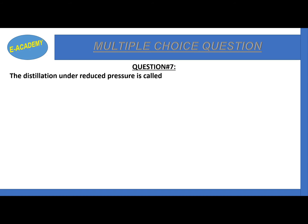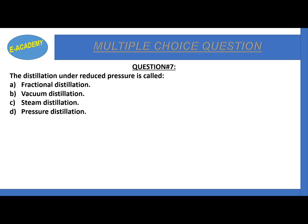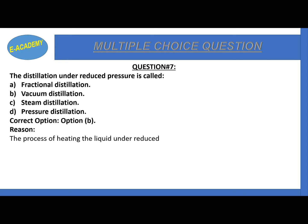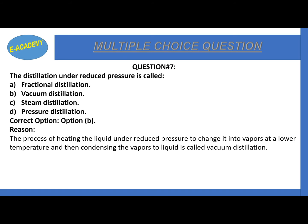Question 7. Distillation under reduced pressure is called: fractional distillation, vacuum distillation, steam distillation, or pressure distillation. The correct answer is vacuum distillation. It is the process of heating a liquid under reduced pressure to change it into vapors at a lower temperature, and then condensing the vapors back to liquid.